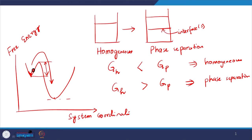If we think about how the barriers will be crossed in reality: let us say I start my system here. Whether I am doing Monte Carlo or molecular dynamics, I am going to undergo fluctuations around this particular state. Only when the fluctuations are large enough can we pretty much cross the barrier. If the fluctuations are small, then we will not cross the barrier.